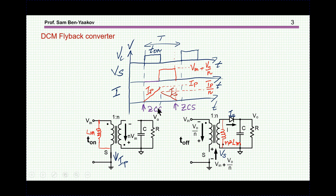However, there is a turn-off loss of the switch, because as this switch is turned off — this is the control of the switch — voltage will rise, and then you might have some switching losses at the turn-off instant.